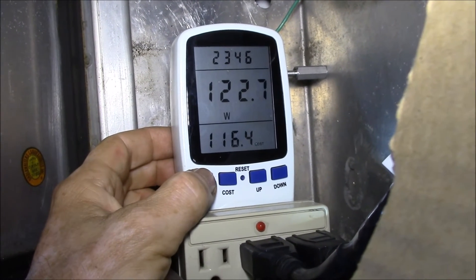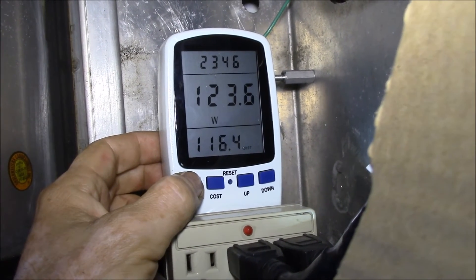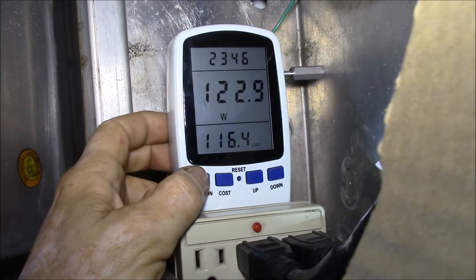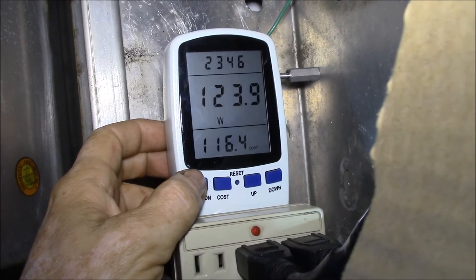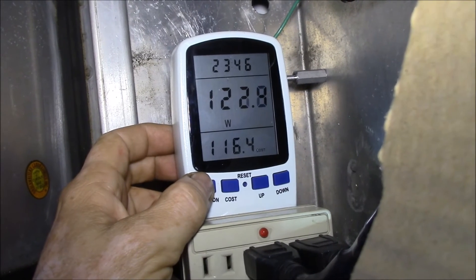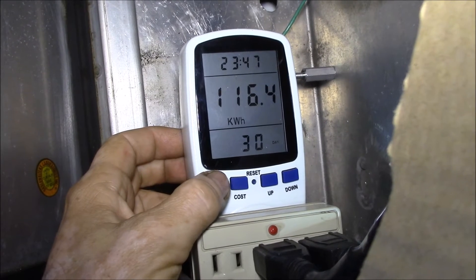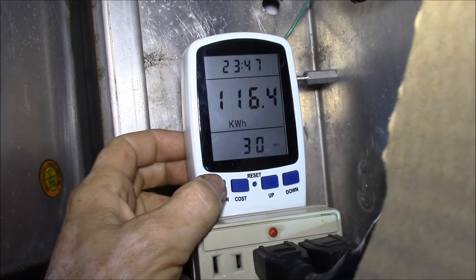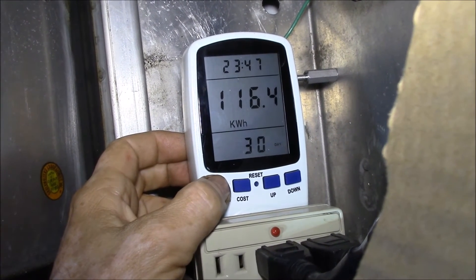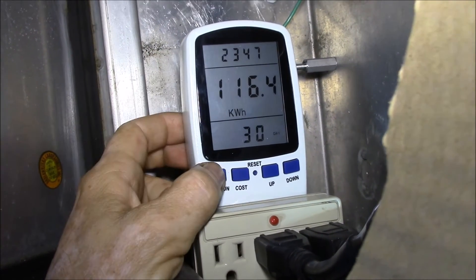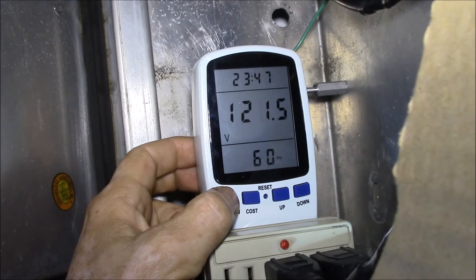This screen has watts and cost, and also shows connected hours, although that rolls over if it's connected a long time. You have kilowatt hours again here. You can see this has been on for 30 days, so 30 days plus almost 24 hours.